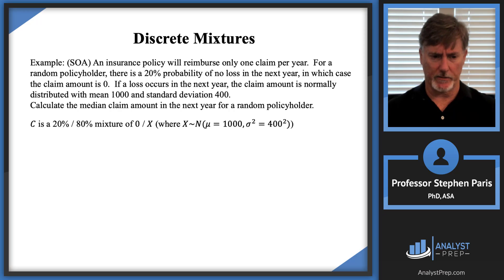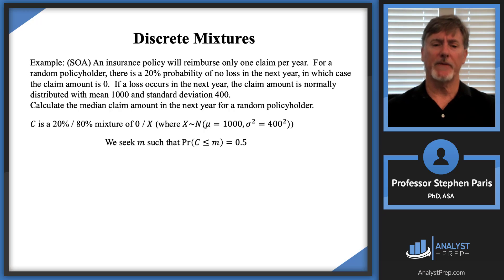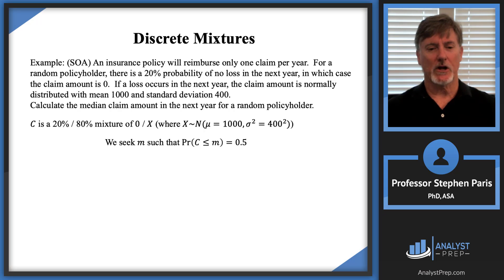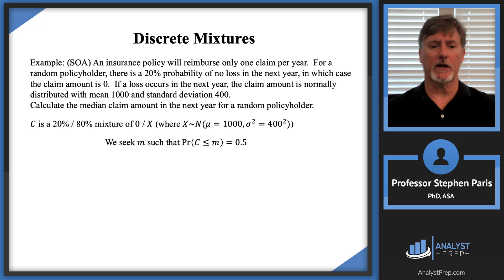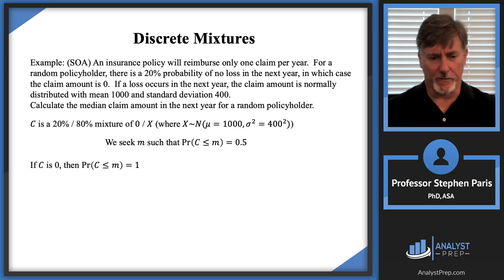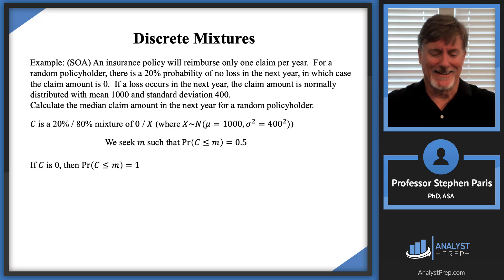C is the same 20%-80% mixture as before, but now I'm looking for the median M — the value for which P(C ≤ M) = 0.5. As a mixture, I look at this probability in each case. We can assume M is positive, since from the answer choices the median will be a positive value. If the claim amount is zero, then P(C ≤ M) = 1, since zero is guaranteed to be less than a positive M.